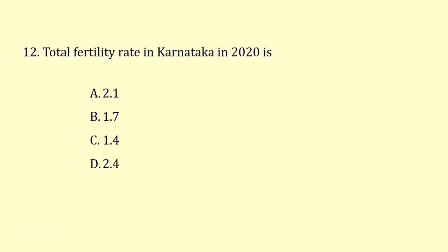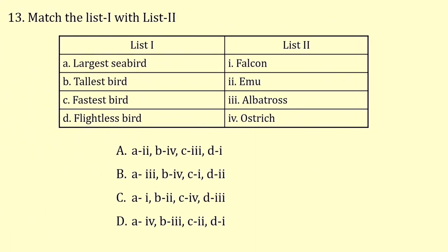Total fertility rate in Karnataka in 2020 is 1.7. Match list 1 with list 2: the largest seabird is Albatross, tallest bird is Ostrich, fastest bird is Falcon, and the flightless bird is Emu. So the correct answer is option B.